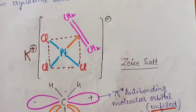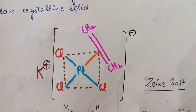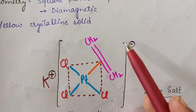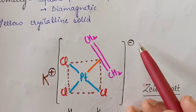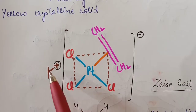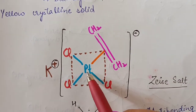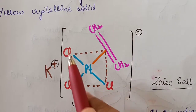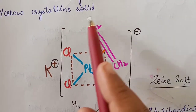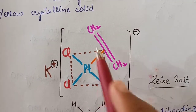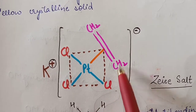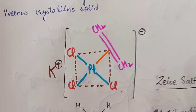Looking at the structure of Zeise's salt: potassium carries a positive charge and the large complex anion carries a negative charge, together forming Zeise's salt — also known as potassium trichloroethylene platinate. Platinum is the central metal atom bonded to three chlorine atoms (trichloro) and one ethylene molecule, which is the unsaturated ligand. This organometallic complex containing an unsaturated ligand is the metal olefin complex.